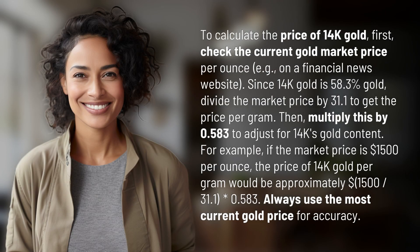To calculate the price of 14k gold, first check the current gold market price per ounce — for example, on a financial news website. Since 14k gold is 58.3% gold, divide the market price by 31.1 to get the price per gram, then multiply this by 0.583 to adjust for 14k's gold content.